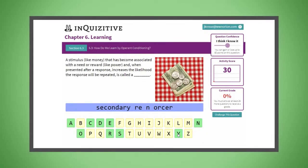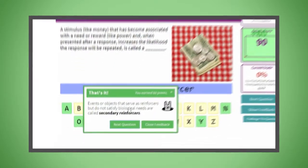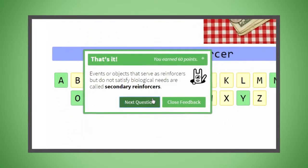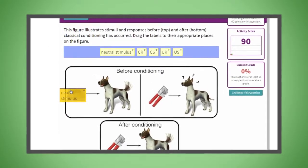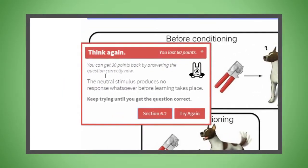Frequent, low-stakes quizzing incentivizes students to engage with course material before coming to class. Along the way, formative, answer-specific feedback coaches students as they work and helps them understand their mistakes.